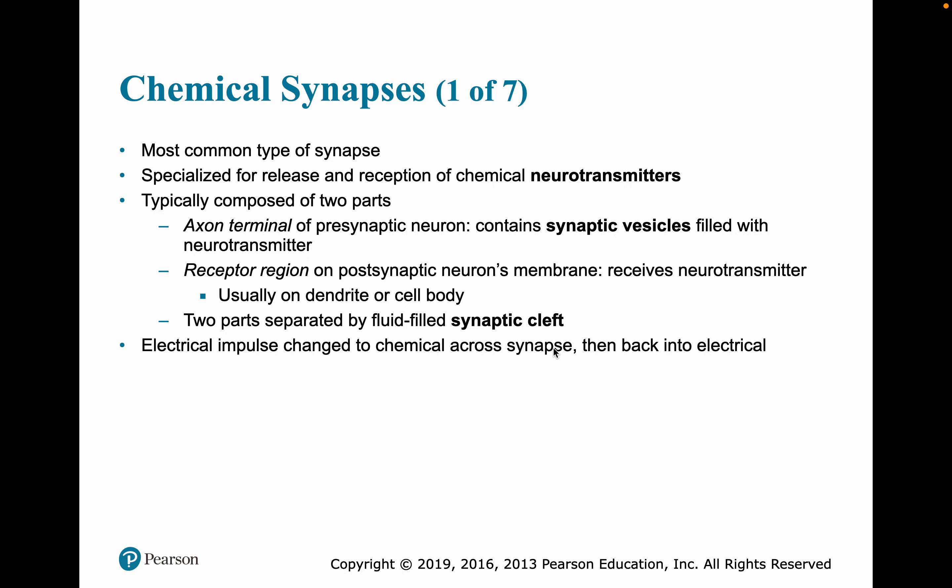Chemical synapses are specialized for the release and reception of neurotransmitters. They are commonly composed of two parts: the axon terminal of the presynaptic neuron, which has synaptic vesicles filled with neurotransmitter, and on the postsynaptic neuron, a receptor region with receptors for that particular neurotransmitter. They are separated by the synaptic cleft. This is similar to what we saw at the neuromuscular junction, but now we're talking about between two nerves. The electrical impulse at the end of the presynaptic neuron triggers the release of chemicals, which then lead to an electrical signal in the postsynaptic neuron.